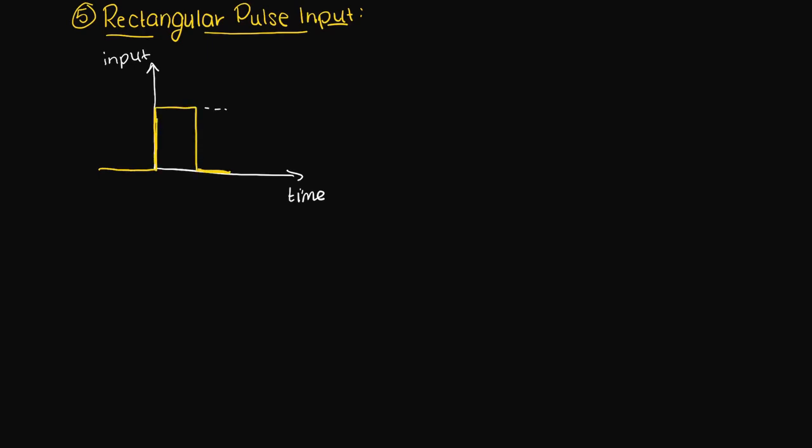Next, a rectangular pulse input is similar to a step input signal, however it turns off after a given amount of time. This would be like turning our tap on all the way for say three seconds and then shutting it off. We represent the rectangular function mathematically like so and the Laplace transform of it is also presented here.